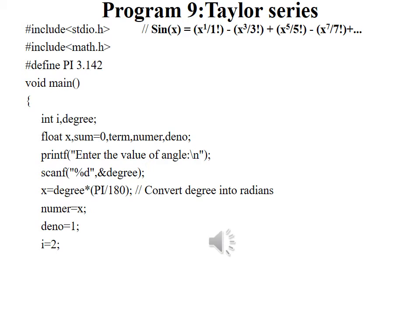Next we will consider the first term of sine value that is x to the power 1 divided by 1 factorial. So numerator is equal to x, that is x to the power 1 is equal to x. The denominator is 1 factorial that is nothing but 1. I is equal to 2 because the difference between these are 2: 1, 3, 5, 7. So I is equal to 2.